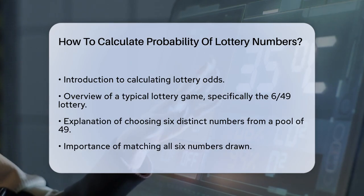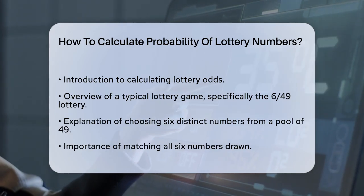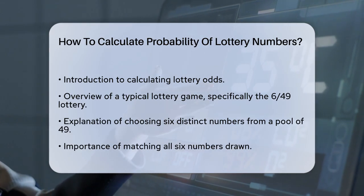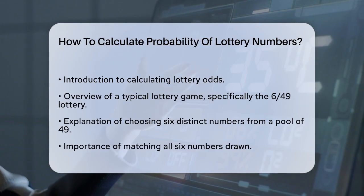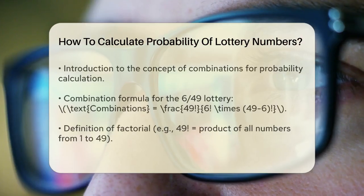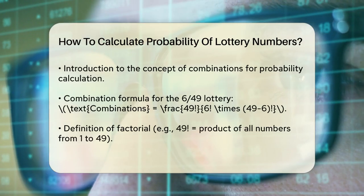For the 6/49 lottery, we need to calculate the number of ways to choose six numbers out of 49. This can be done using the combination formula.